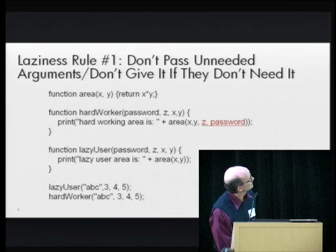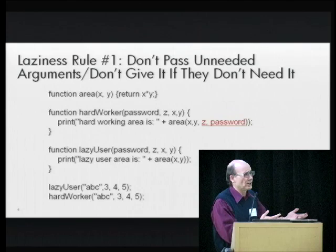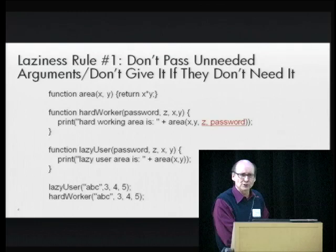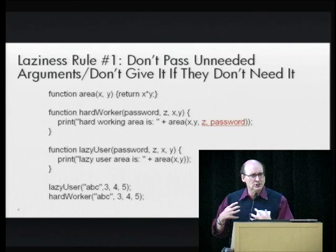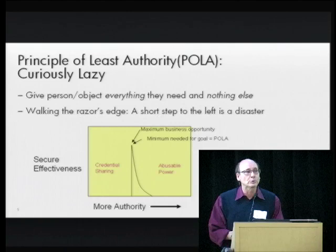The decision not to pass the argument z is simply a matter of laziness. But the decision not to pass the password is not only lazy — it's actually a security decision. We have decided not to pass the password to the function. So here, laziness has served the purpose of being more secure. The rule is simply: don't give an object something that it doesn't need to do the job you want it to do.